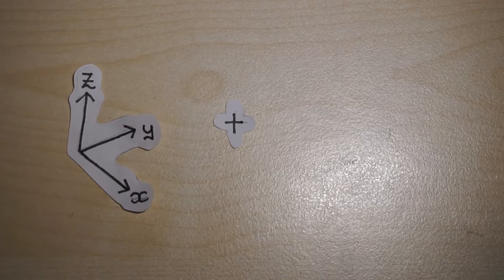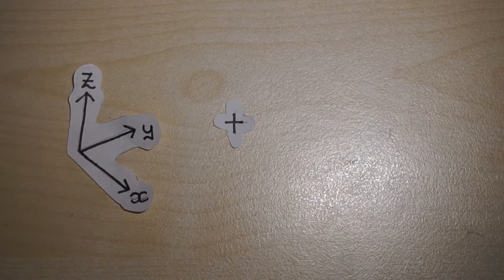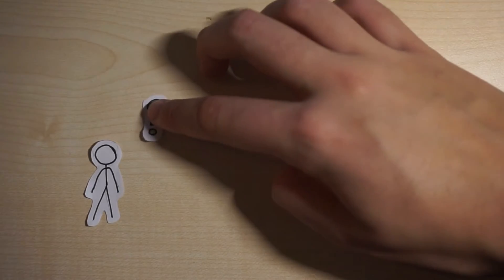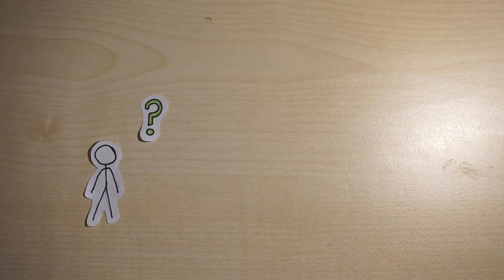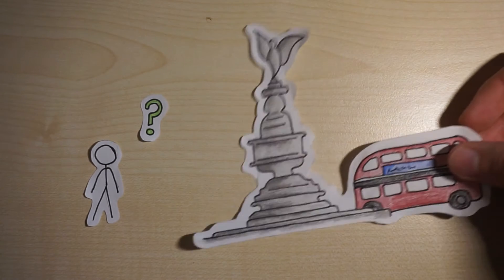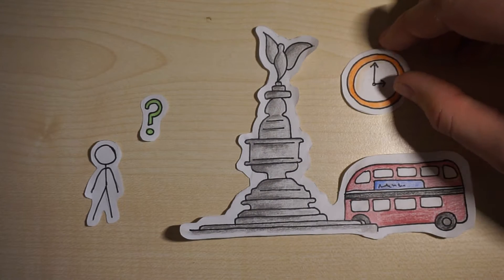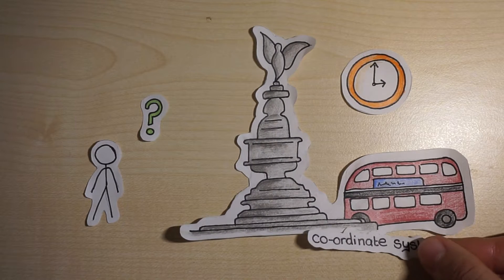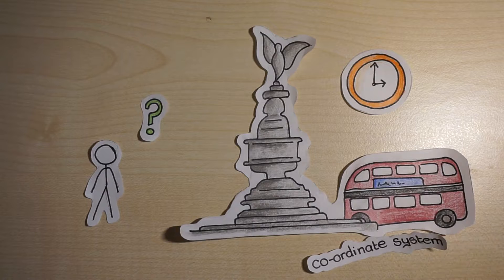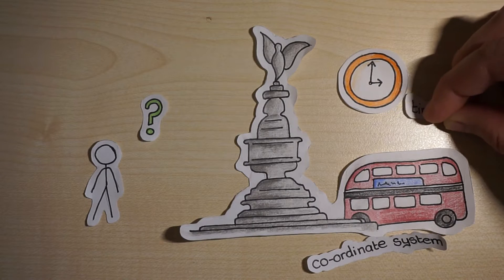Another way of thinking about a frame of reference is to think about all the information you'd need to meet a friend — you'd have to tell them where and at what time. So you might meet them in Piccadilly Circus at 3pm. Your coordinate system is your whereabouts relative to London, and your timescale is GMT.